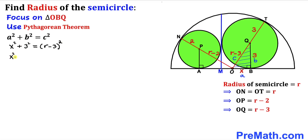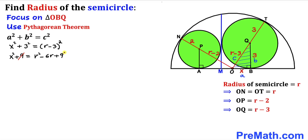Simplifying: x² + 9 = r² − 6r + 9. The 9 on each side cancels, giving us x² = r² − 6r. Taking the square root of both sides, we get x = √(r² − 6r). So our x value turns out to be √(r² − 6r).